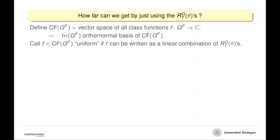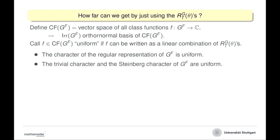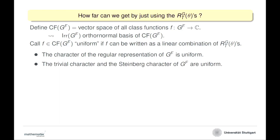Just a few examples: the character of the regular representation is uniform, the trivial character is uniform, the Steinberg character is uniform. Also a class function is called p-constant if it is constant on p-sections — that is, if its values only depend on the semisimple part of an element — then such a thing is uniform. It's a very useful result.